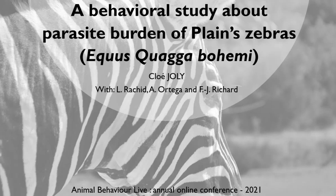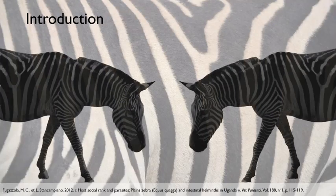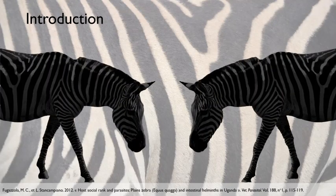Welcome everyone. My name is Chloé and I'm going to present how social behaviors impact parasite burden. Gastrointestinal parasites are common in equids and are transmitted through contact between the mouth and the environment, for instance while grazing.